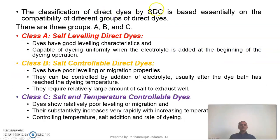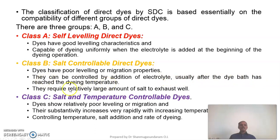According to the Society of Dyers and Colourists, direct dyes are classified into three categories: A, B, and C. Class A belongs to self-leveling direct dyes — dyes having good leveling characteristics capable of dyeing uniformly when electrolyte is added at the beginning of the dyeing operation. Class B is salt-controllable direct dyes — dyes having poor leveling and migration properties, controlled by the addition of electrolyte usually after the dye bath has reached the dyeing temperature. They require a relatively large amount of salt for exhaustion.